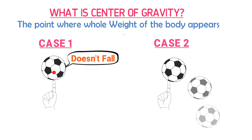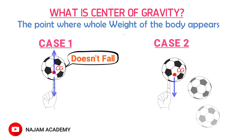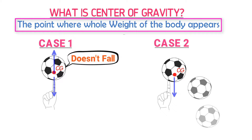In the first case, the center of gravity of the football is above your finger. If the earth's force or weight pulls it with 10 N, then since the center of gravity is on your finger, your hand pushes the football upward with 10 N. Thus, the 10 N downward force and 10 N upward force cancel out, and the football doesn't fall. In the second case, the center of gravity is outside your finger. When weight pulls it with 10 N downward, it starts falling. From this example, we learn that center of gravity is the point where the whole weight of the body appears to act.